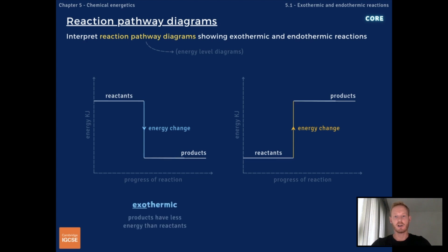In an exothermic reaction, the products have less energy than the reactants, because thermal energy is transferred to the surroundings. In an endothermic reaction, thermal energy is taken in from the surroundings, so the products have more energy than the reactants.